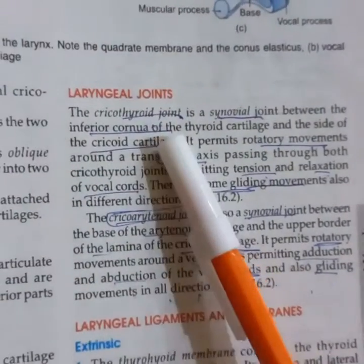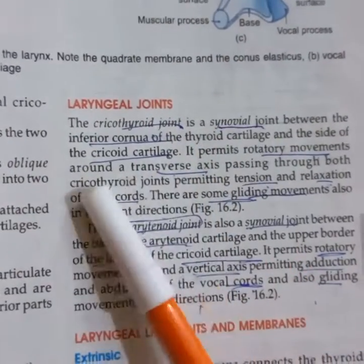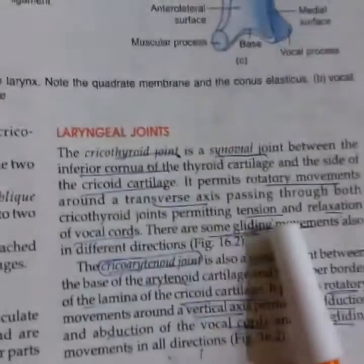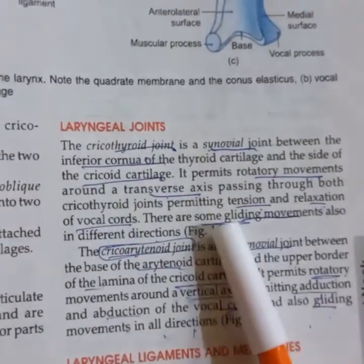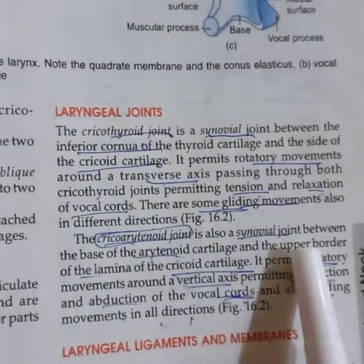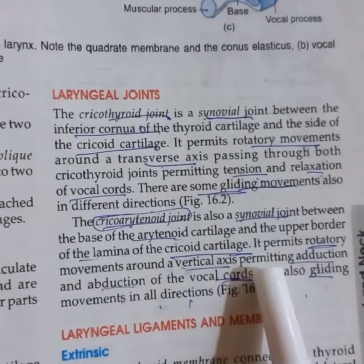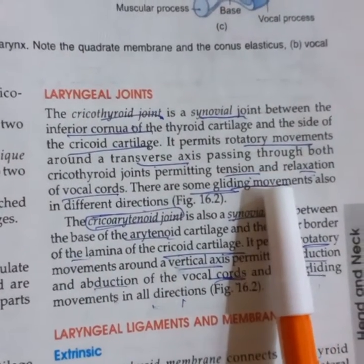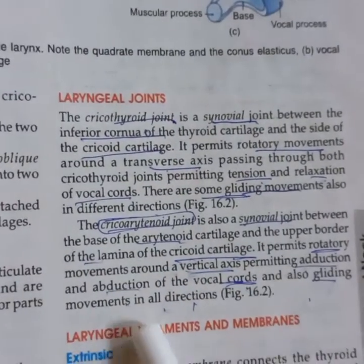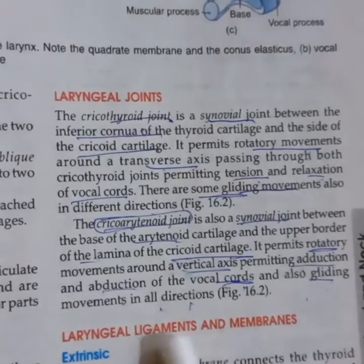The cricothyroid joint is a synovial joint between the inferior cornua of the thyroid and the lamina of the cricoid. The cricoarytenoid joint is between the base of the arytenoid and the cricoid cartilage, allowing rotating movement on a vertical axis and gliding movement. On a horizontal axis this is a nodding movement; on a vertical axis it is a rotational movement, enabling adduction and abduction of the vocal cords.